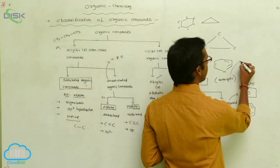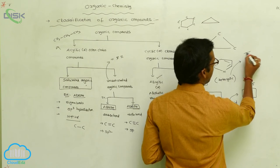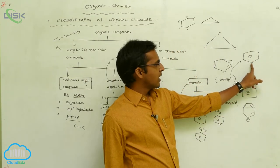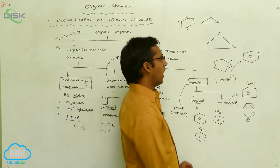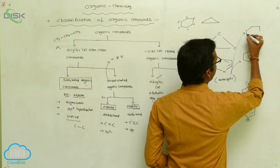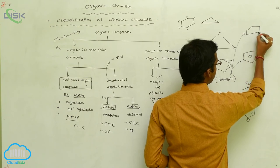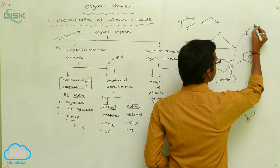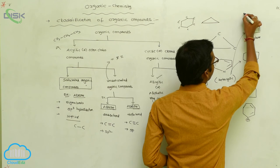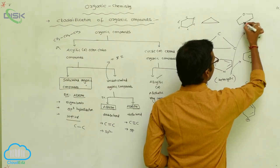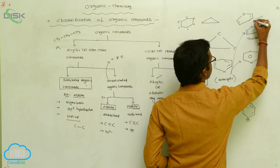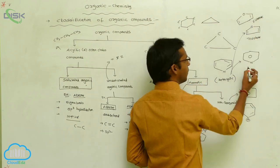Heterocyclic compounds contain atoms other than carbon within the ring. For example, a six-membered ring with a nitrogen atom is called pyridine. A five-membered ring with a sulfur atom is called thiophene. A five-membered ring with an oxygen atom is called furan. These are examples of heterocyclic compounds.